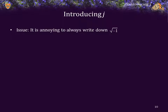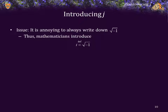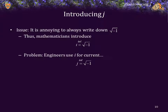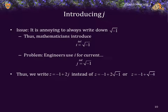It's becoming clear that it's annoying to always have to write down the square root of negative 1. Consequently, mathematicians introduced the idea of i, defined as the square root of negative 1. Engineers desperately needed the square root of negative 1, but engineers use i for current. So engineers chose j to be defined as the square root of negative 1. Thus, we will now write z equals negative 1 plus 2j instead of writing z equals negative 1 plus twice the square root of negative 1 or z equals negative 1 plus the square root of negative 4. It's just clearer, more compact, and easier to understand.